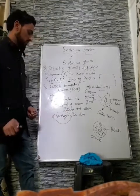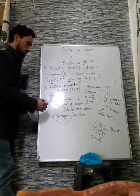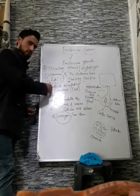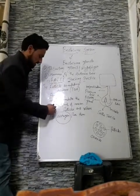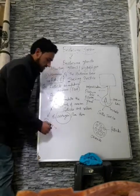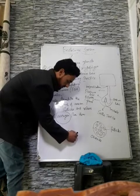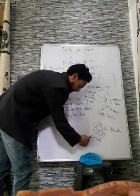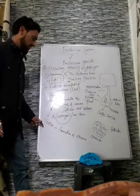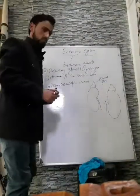In males, the follicle stimulating hormone is also released by the anterior lobe of the pituitary gland into the blood, where it reaches the testes and leads to the formation of sperms. Sperms will not be formed unless the testes receive the follicle stimulating hormone.